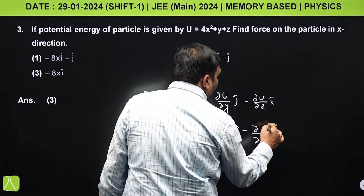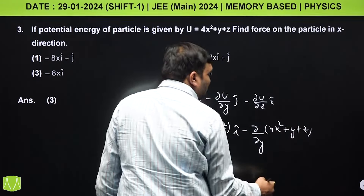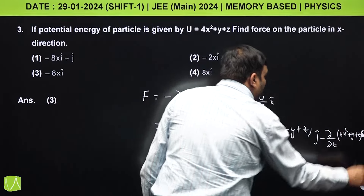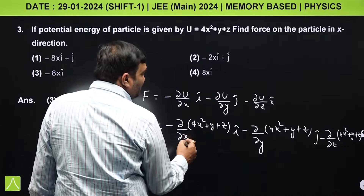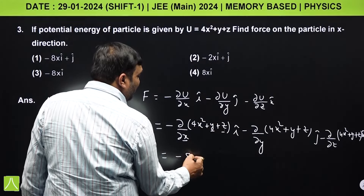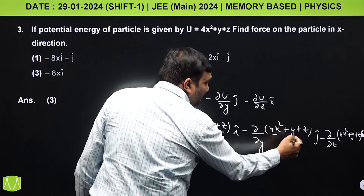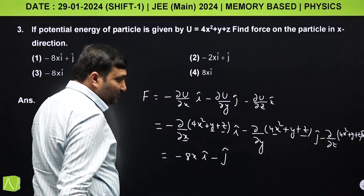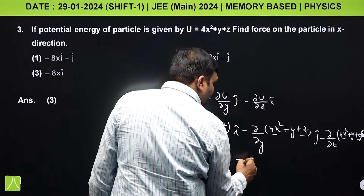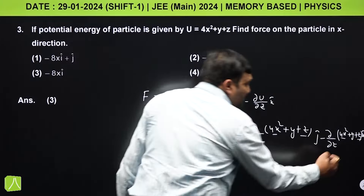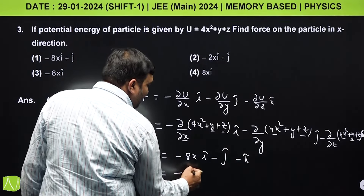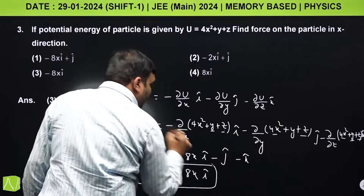Taking partial derivatives: with respect to x, y and z are treated as constants, so ∂U/∂x = 8x, giving −8xî. With respect to y, x and z are constants, so ∂U/∂y = 1, giving −ĵ. With respect to z, x and y are constants, so ∂U/∂z = 1, giving −k̂. Force in the x-direction is −8xî.